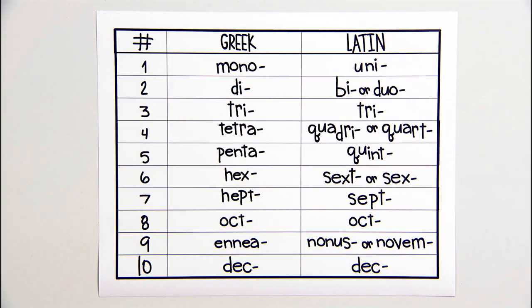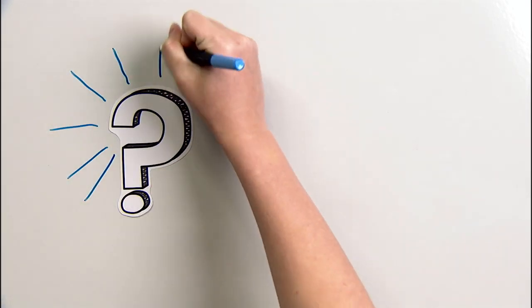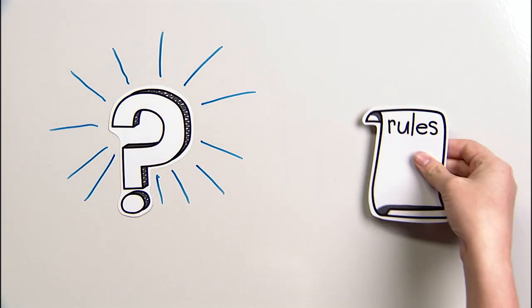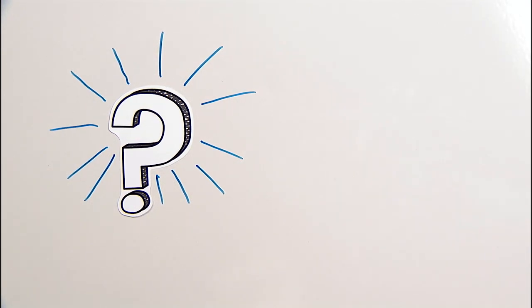Here's a quick guide to the Latin and Greek prefixes. Three of the numbers actually have the same prefix in both languages. Wouldn't it be super helpful if there were rigid rules about which prefixes we use for certain types of things? Unfortunately, there aren't. But there are some patterns.